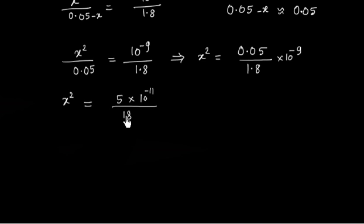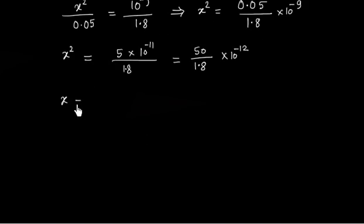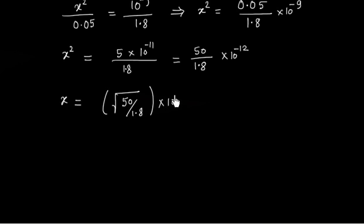We can rewrite X² = 50 / 1.8 × 10⁻¹². Therefore X = √(50 / 1.8) × 10⁻⁶. Calculating the square root of 50 / 1.8 gives approximately 5.27.